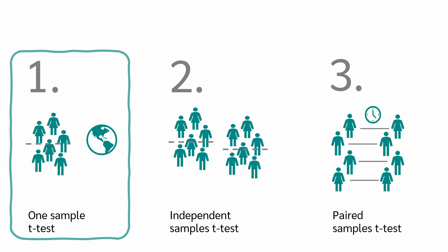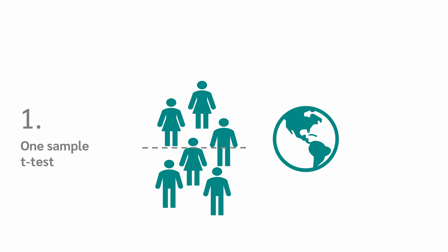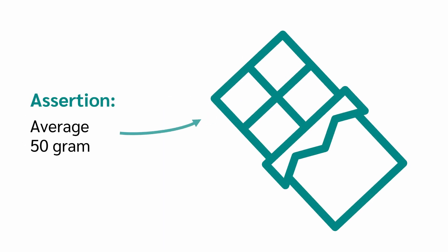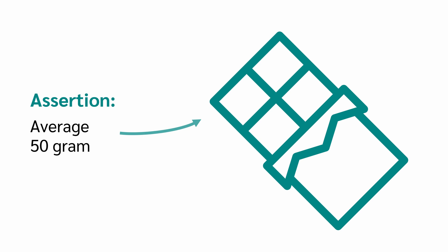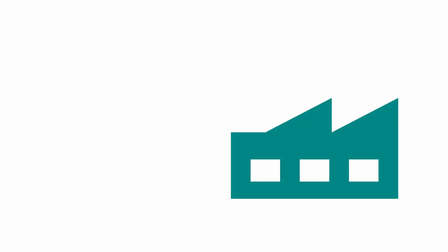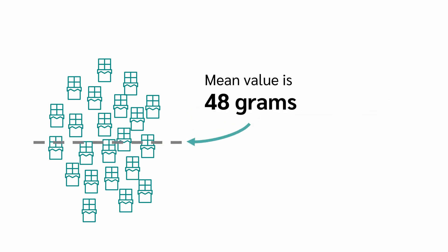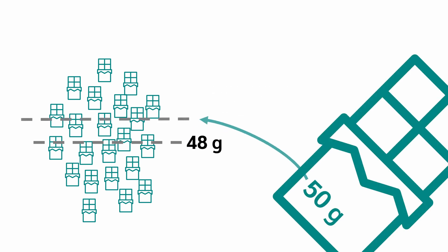When do we use a one-sample t-test? We use the one-sample t-test when we want to compare the mean of a sample with a known reference mean. For example, a chocolate bar manufacturer claims that its chocolate bars weigh an average of 50 grams. To check this, we take a sample of 30 bars and weigh them. The mean value of this sample is 48 grams. We can use a one-sample t-test to check if 48 grams is significantly different from the claimed 50 grams.